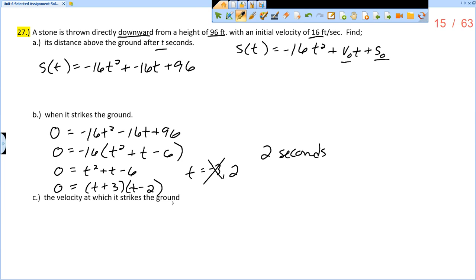Now, the velocity at which it strikes the ground. So what does that really mean? That means I want to know v of 2. What is the velocity at precisely 2 seconds when it strikes the ground?